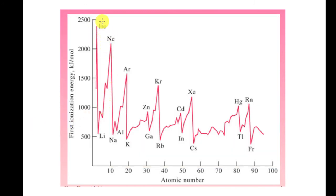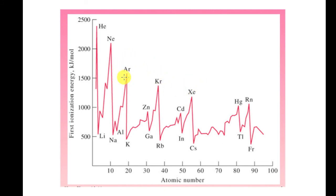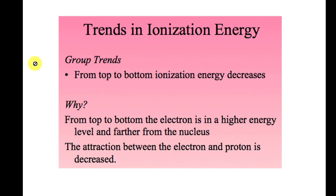Noble gases — helium, neon, argon, krypton — have very high ionization energies, meaning it's very hard to remove their electrons. However, going down to krypton and xenon, ionization energies are relatively lower than helium and neon. In fact, compounds containing xenon have been found in nature, and some with krypton have been made in the lab. Their ionization energies dip because of the large number of energy levels, making those outer electrons easier to remove.